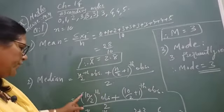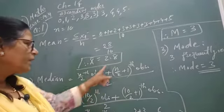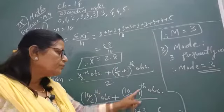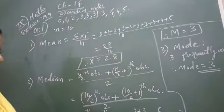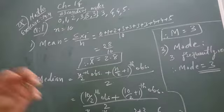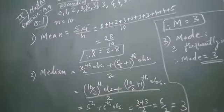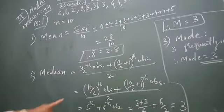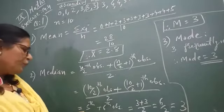n means 10. So 10 upon 2th observation, 10 upon 2 plus 1th observation upon 2. Now put the values here. Put the values and see that the 10 upon 2 means 5th observation.